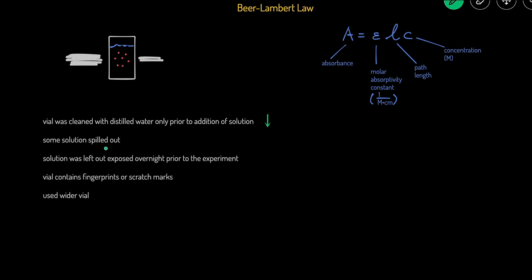Second, if some solution was spilled when transferring it to the vial — that will not affect the absorbance at all. Concentration is the ratio of solute to solvent, so if you spill some out, the remaining solution has the same ratio of solute to solvent. The concentration stays the same, so the absorbance stays the same.